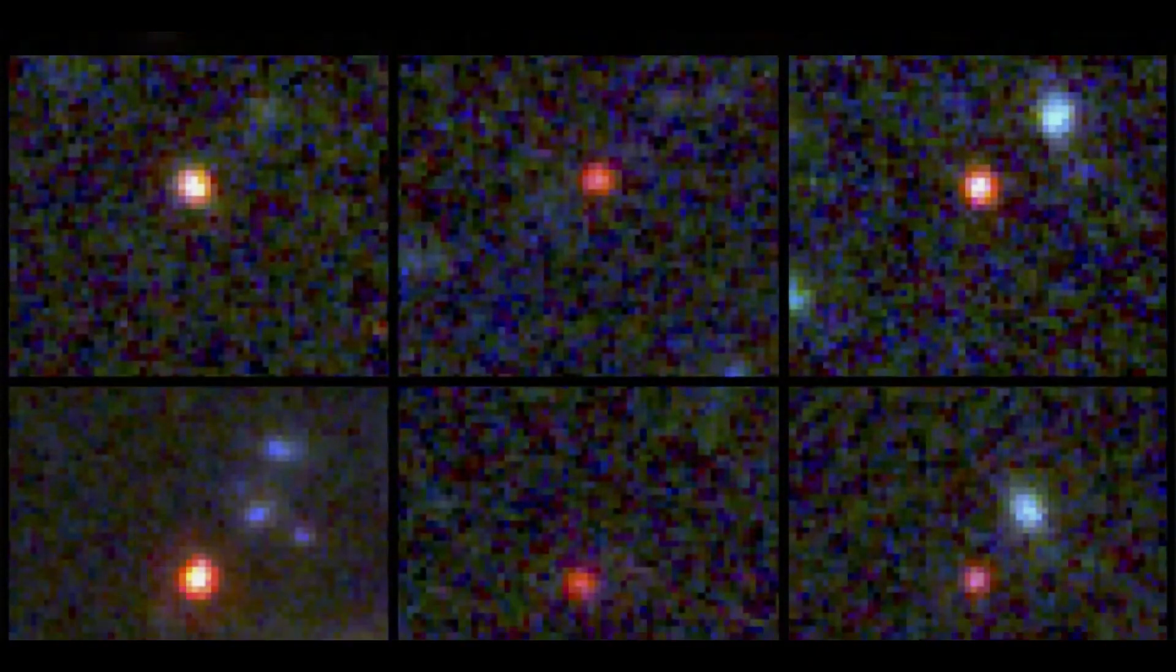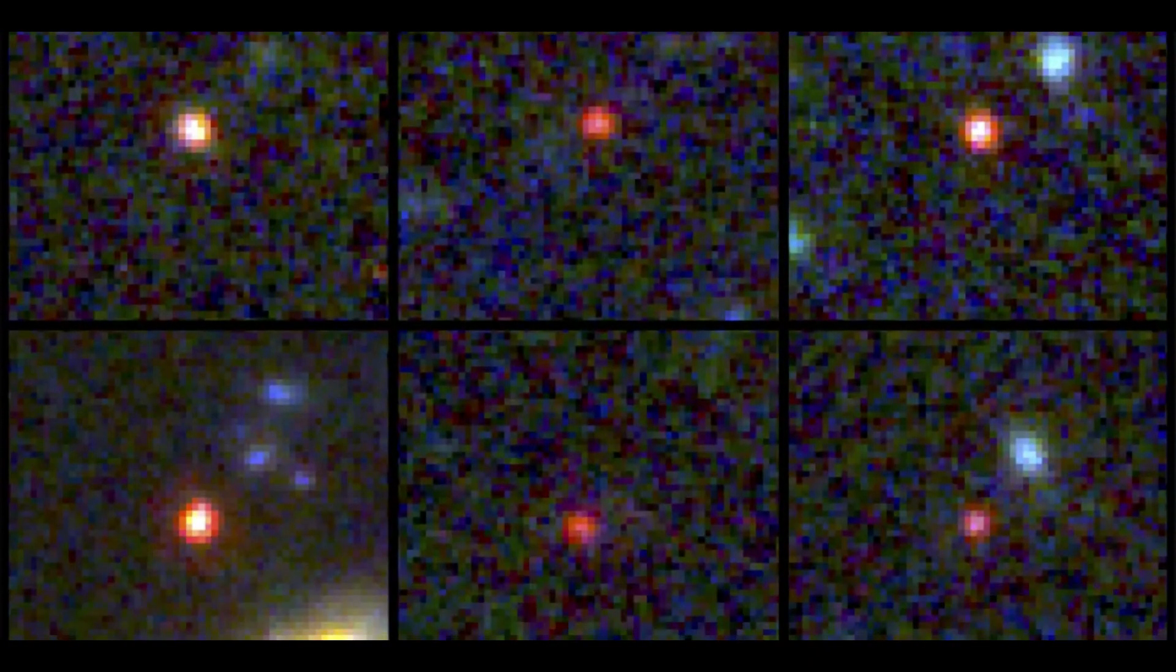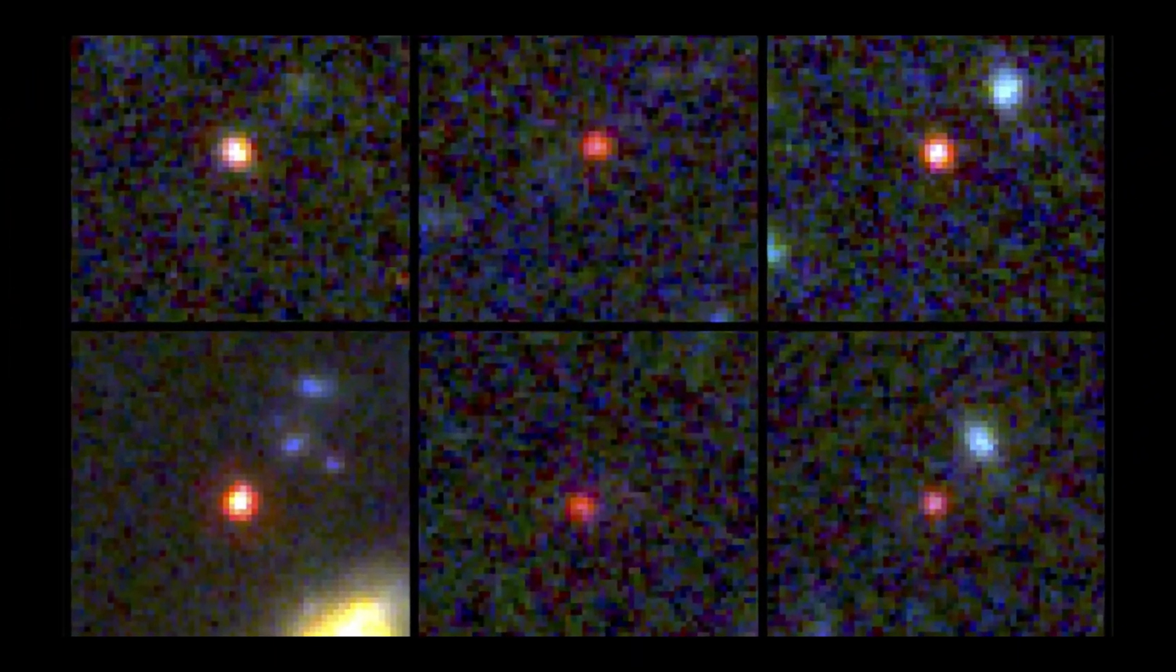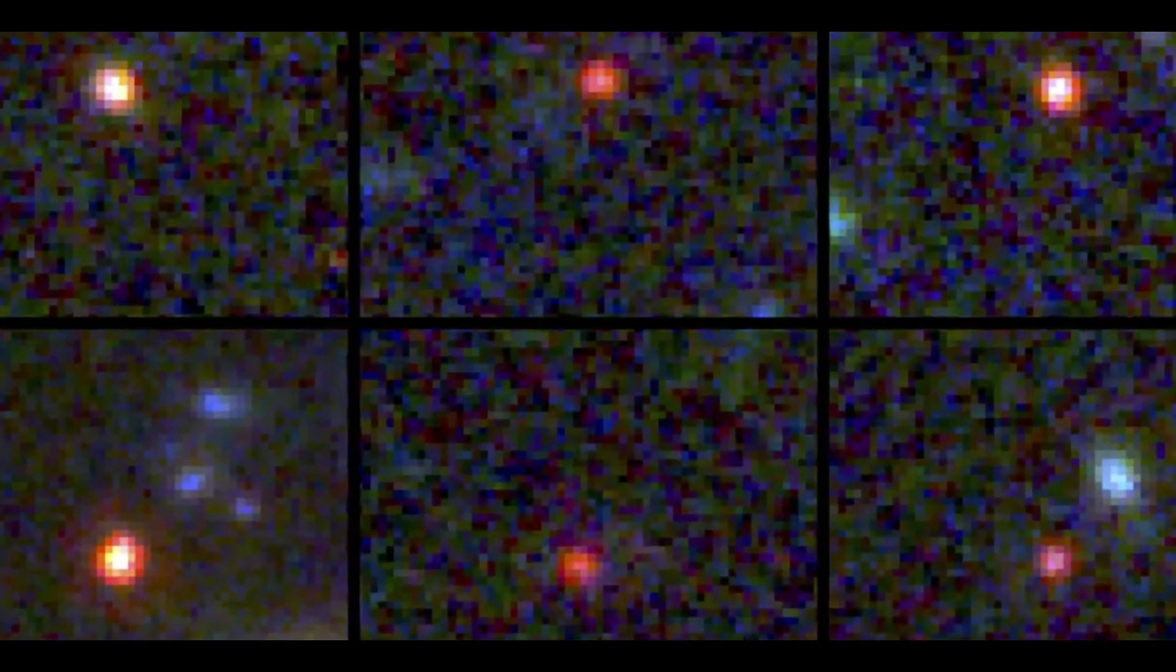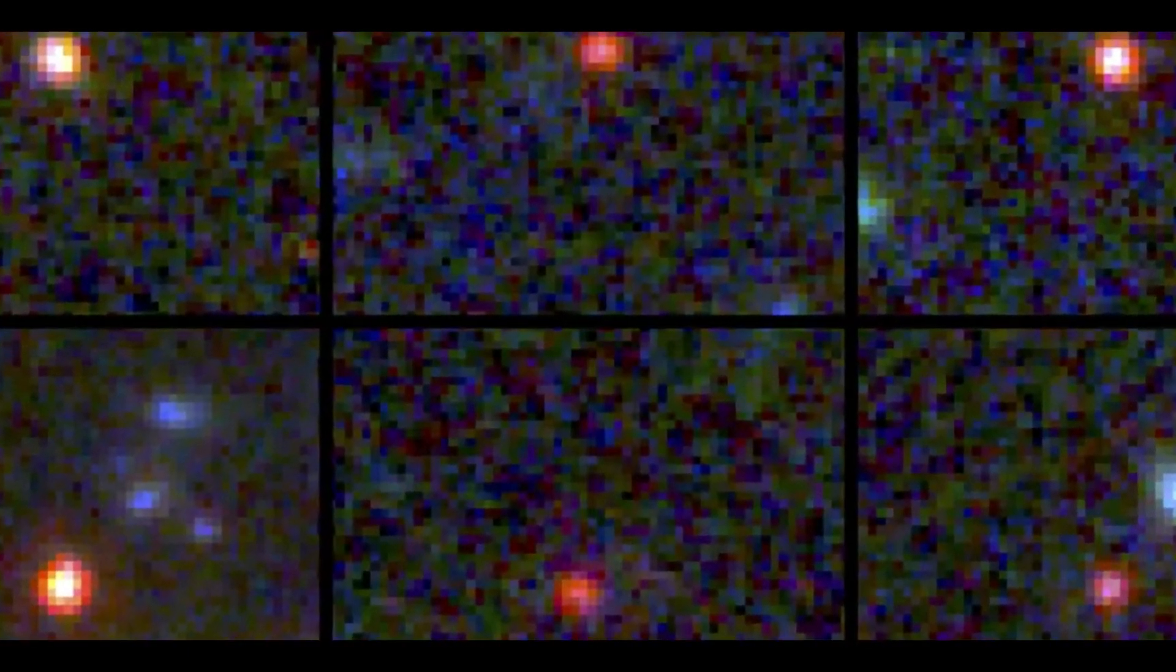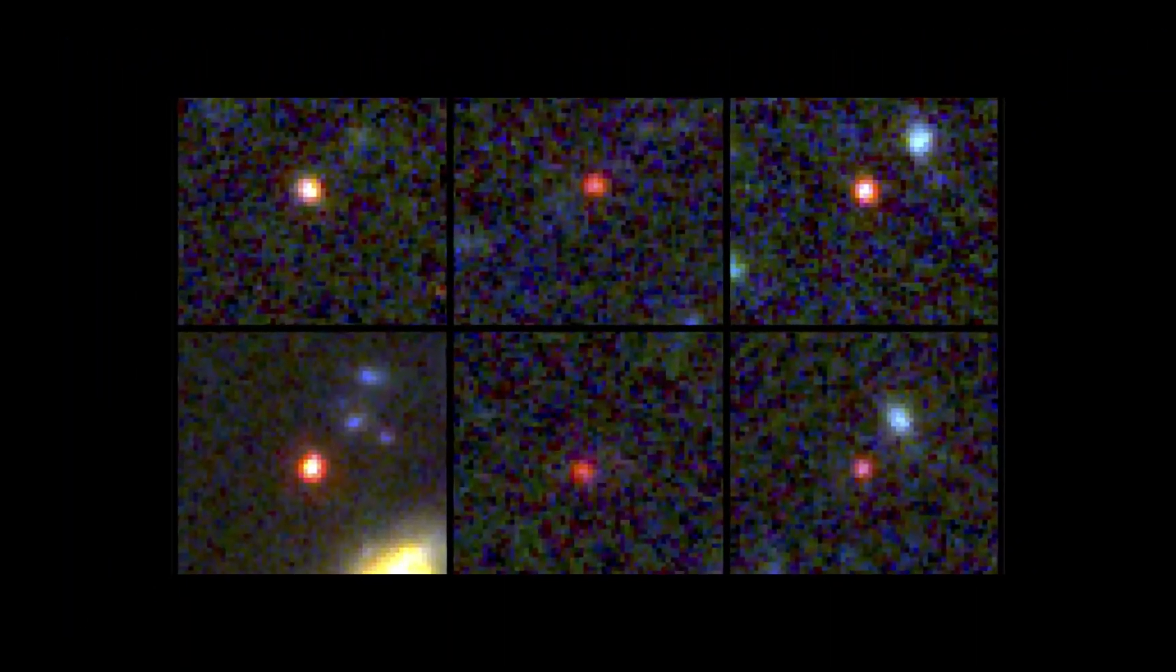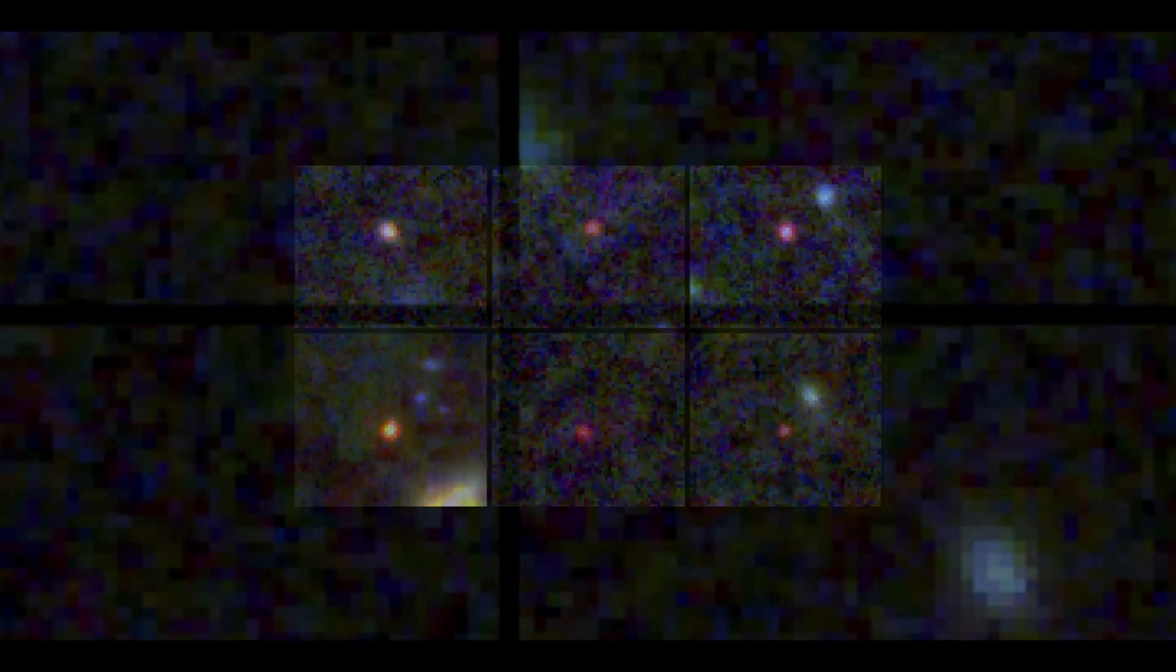These galaxies, revealed in a recent research based on Webb's first data release, are so far away that the powerful telescope only sees them as tiny reddish dots. Astronomers determined that they were watching these galaxies in the early stages of our universe, only 500 to 700 million years after the Big Bang, by examining the light radiated by them.